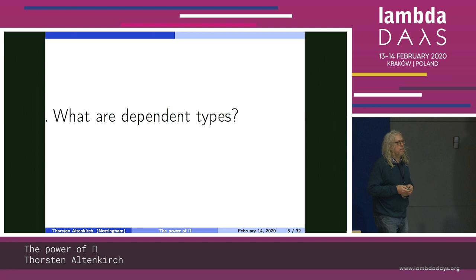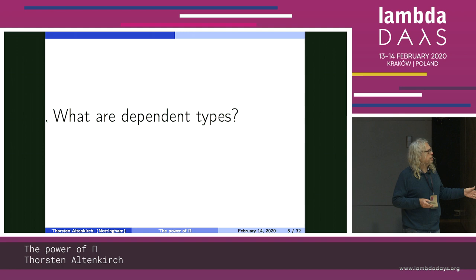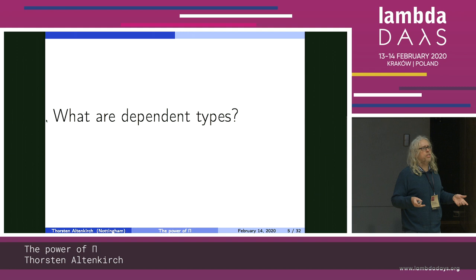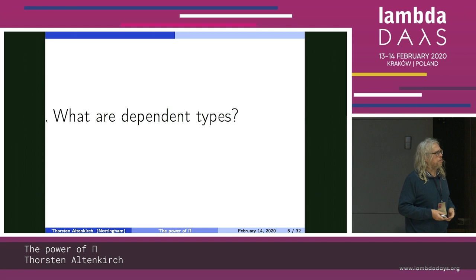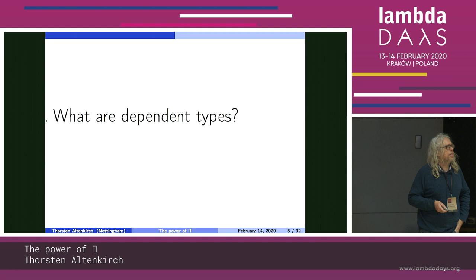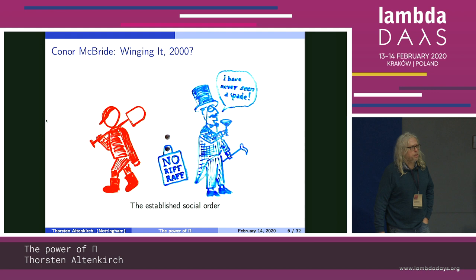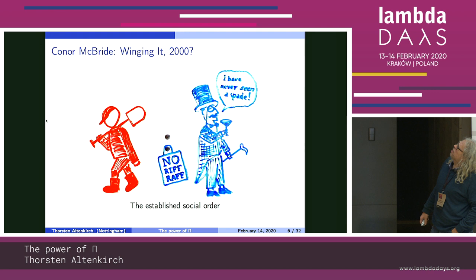My point is the solution — the round wheel — is actually dependent types. Let me present at least some evidence, and let me first explain what dependent types are. I don't really want to repeat myself from last year's talk here. But I thought I should give a reference. There is what I think is the penultimate talk about dependent types: Conor McBride's talk called 'Winging It', from around 2000.